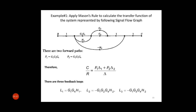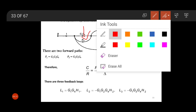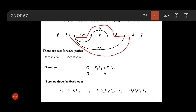Next, we check how many loops there are. There are three loops: L1, L2, and L3. The first loop gain is G1*G4*H1. The second loop gain is minus G1*G2*G4*H2. The third loop gain is minus G1*G3*G4*H2.